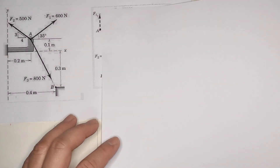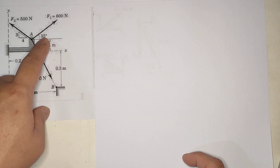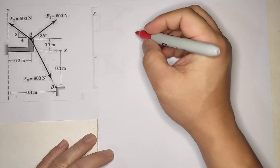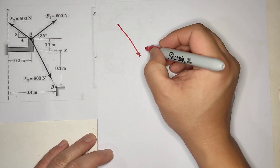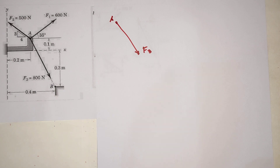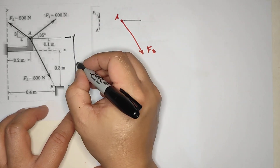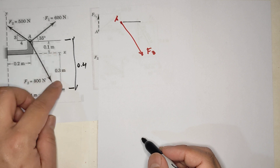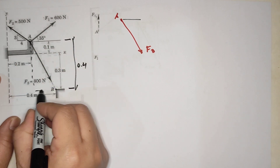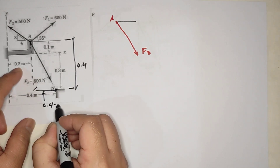For F3, you look at the dimensions — there's no given similar triangle or angle in degrees, but you have the dimensions. From the diagram, the horizontal distance is 0.1 plus 0.3 equals 0.4, and the vertical distance is 0.4 minus 0.2, so that dimension is 0.2.